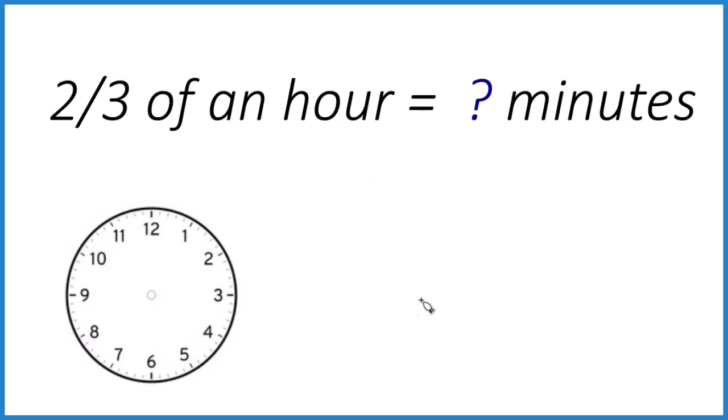So probably the easiest way to do this is to say two-thirds, and we're going to multiply that by an hour. An hour has 60 minutes. So when we take two-thirds of 60 minutes, we'll get two-thirds of an hour.